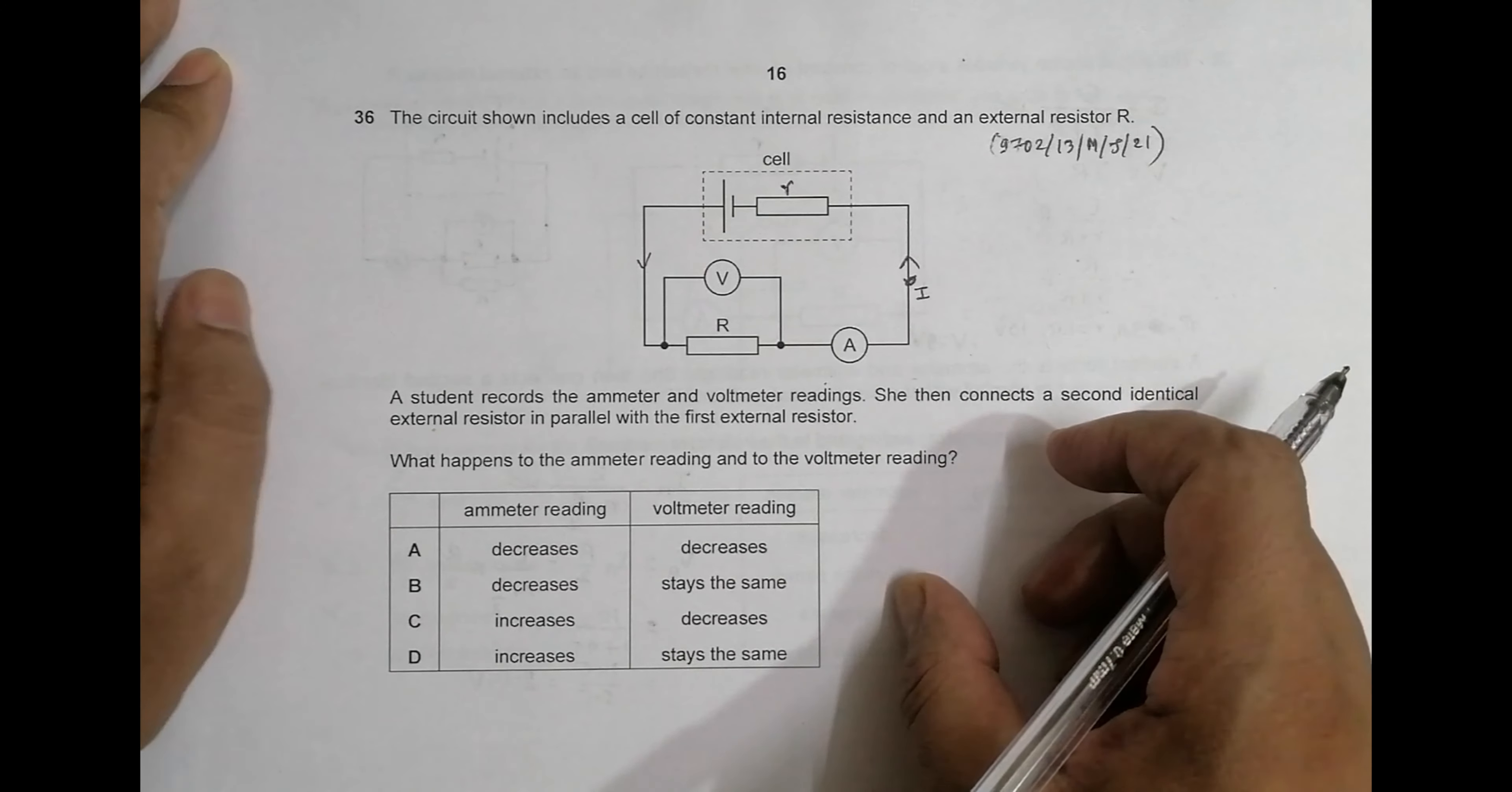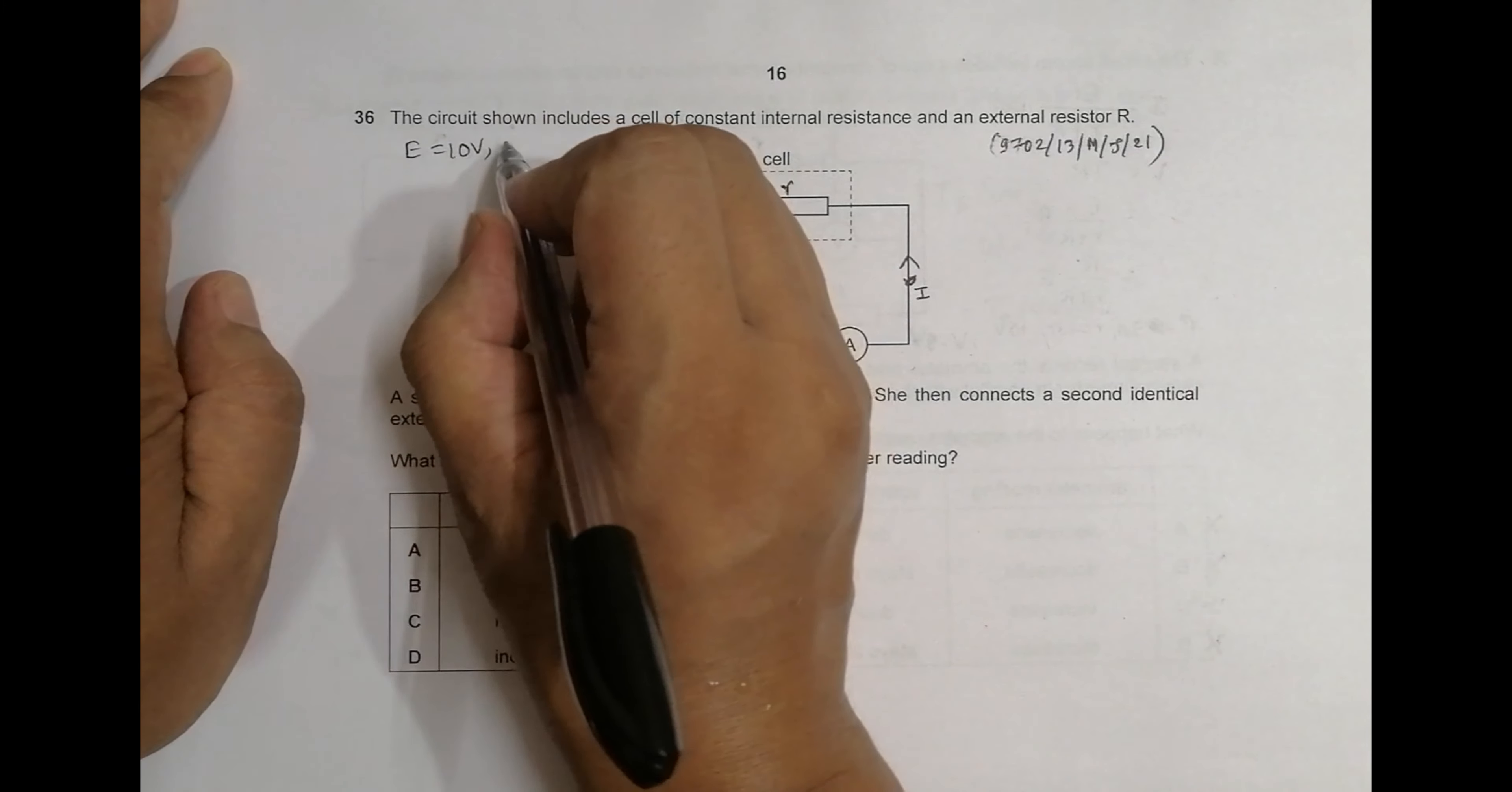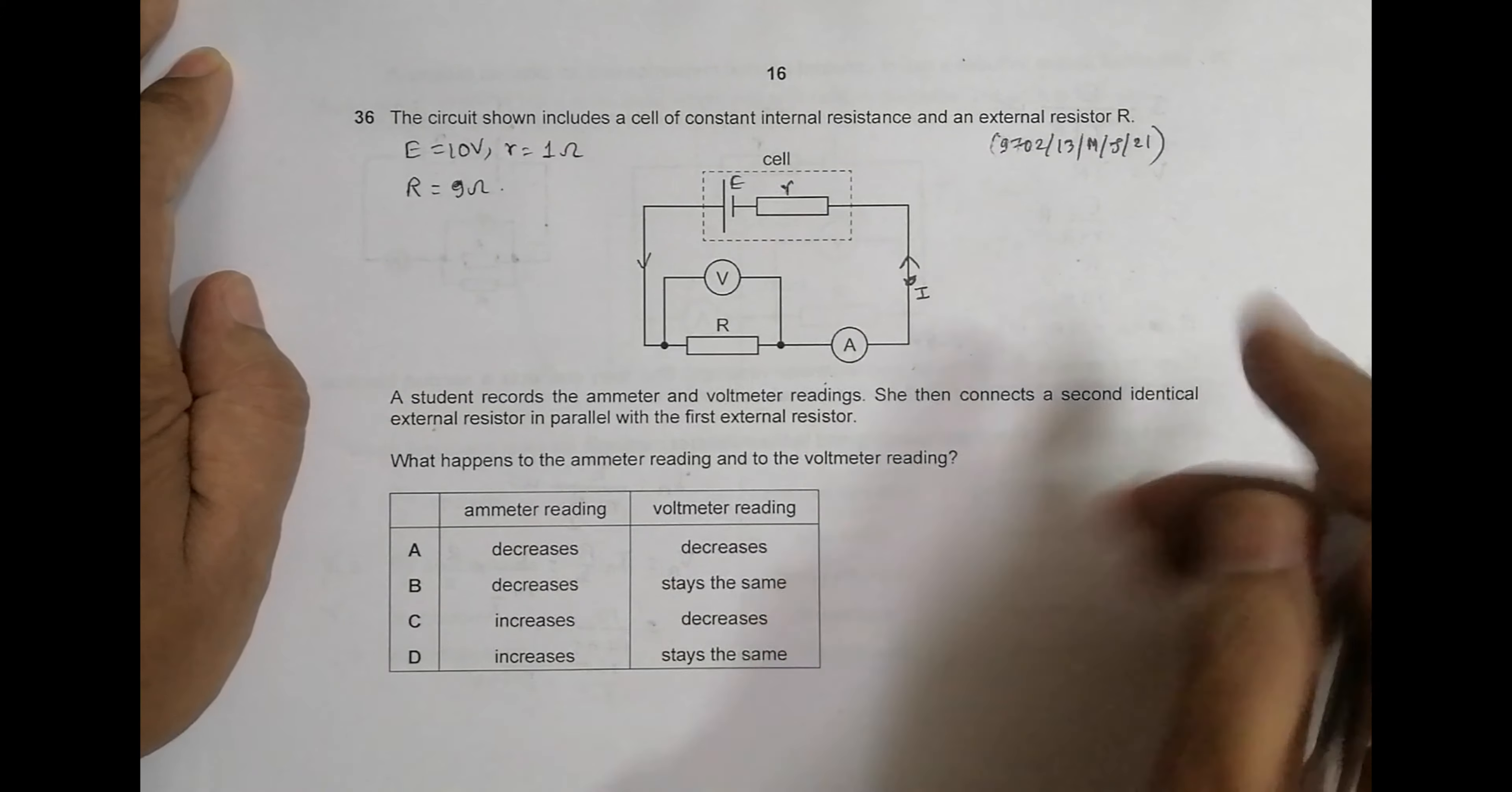Let us use certain values here. Let me say this EMF E is equal to 10 volts. This small r is equal to—it won't be large—so it is 1 ohm. Let the value of this external resistance equal 9 ohms.